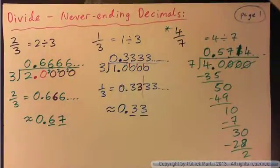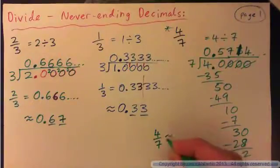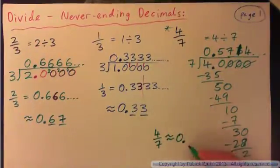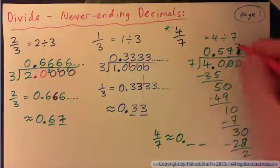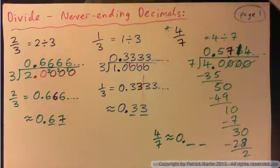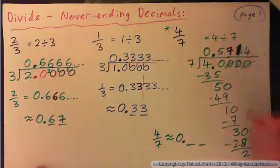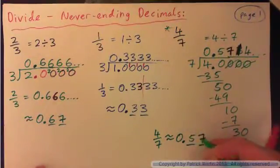So if I round that to the nearest hundredth, I can say 4 sevenths is approximately 0. — I just want 2 digits, to the nearest hundredth. The hundredth spot is here. The next digit is a 1, so I round down. So it's just 0.57.